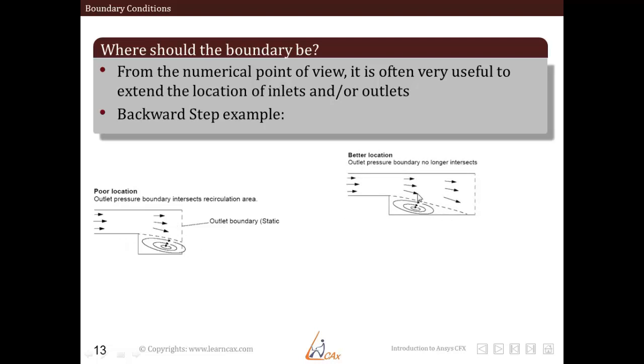So what we do is extend the boundary so that it no longer intersects the recirculation region, and then we can give a constant pressure condition here which makes sense. The ideal is actually to extend so long that here we have a developed profile or sort of a uniform profile and we can give a standard or a single value of static pressure.